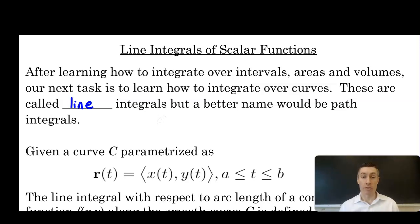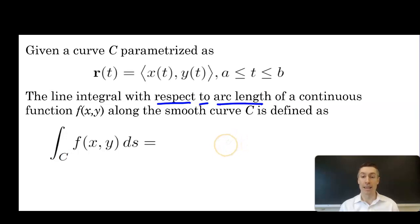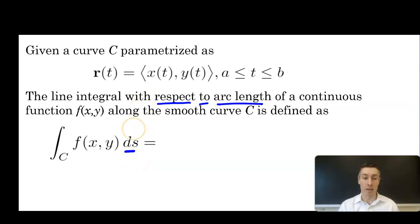Generally speaking, we can have circular curves or parabolic curves — they don't have to be linear in nature. Formally defining a line integral: given a curve C parameterized as r(t) = ⟨x(t), y(t)⟩ on the interval a to b, the line integral with respect to arc length of a continuous function f(x,y) along the smooth curve C is defined as the integral along C of f(x,y) ds.